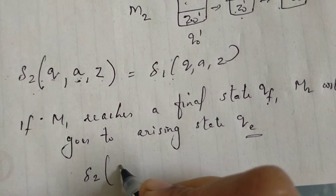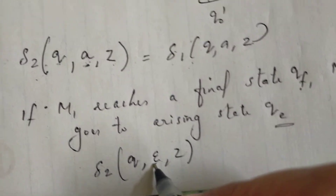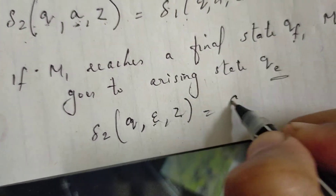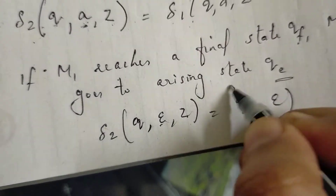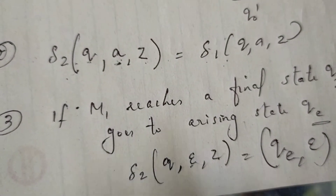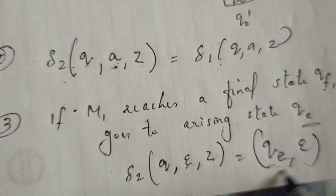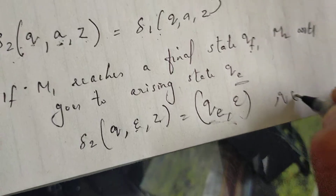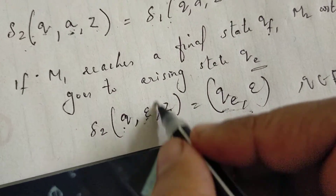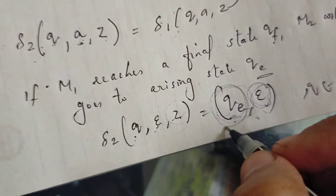Third step: when M1 is in a final state qf, M2 transitions to the arising state qe. The transition is delta2 of q, epsilon, z — the input is empty. In the final state q of M1, when input is completely consumed, M2 goes to qe with epsilon, popping the top of the stack.